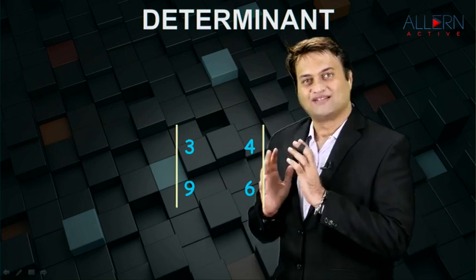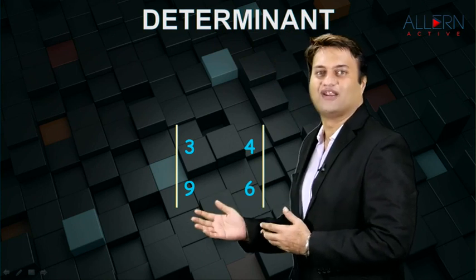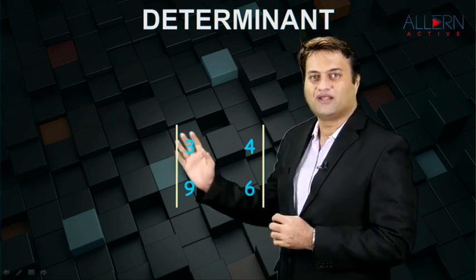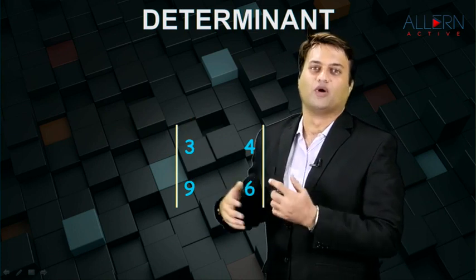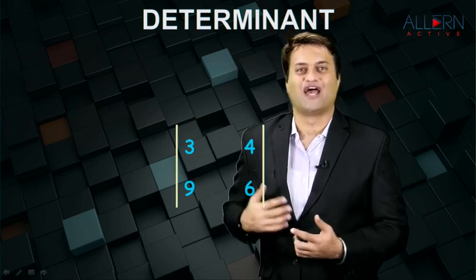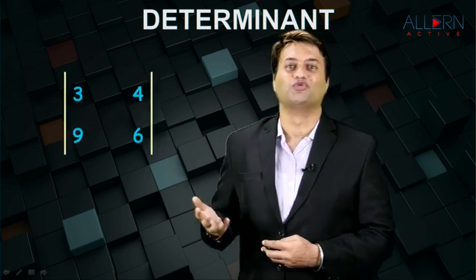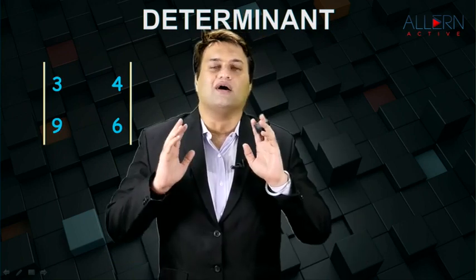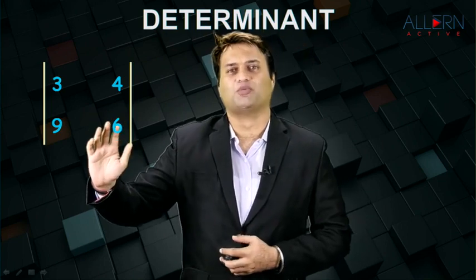Now what exactly is a determinant? This is the determinant which is there on your screen right now. A determinant is an arrangement of numbers between two vertical lines, and the numbers are arranged in the form of rows and columns. So here there are two rows and two columns, so we call it a two by two determinant. In your tenth standard, in this chapter, we will only be dealing with a two by two determinant.